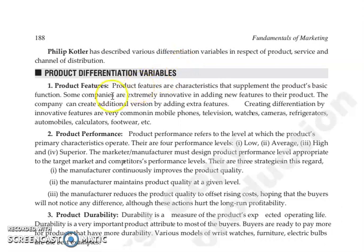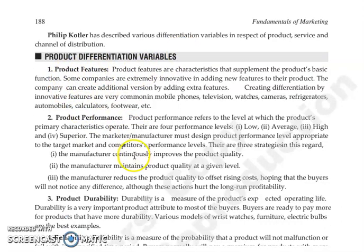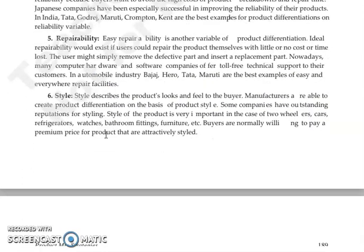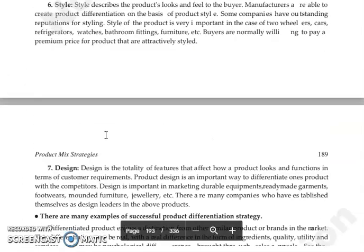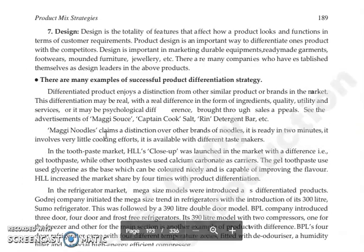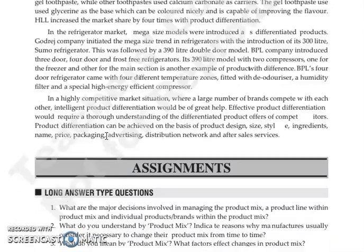The variables of product differentiation include product features, product performance, product durability, reliability, repairability, style, and design. Using these variables, you can differentiate your products effectively.